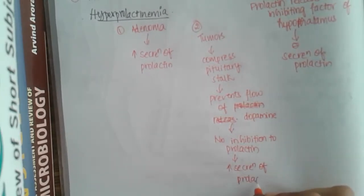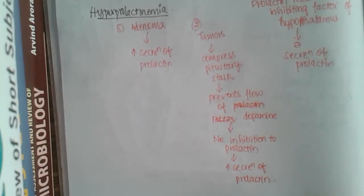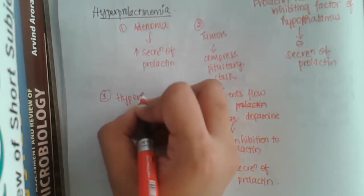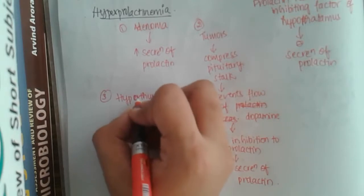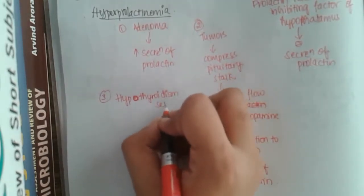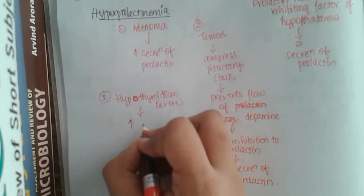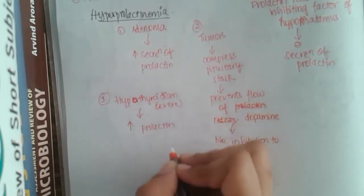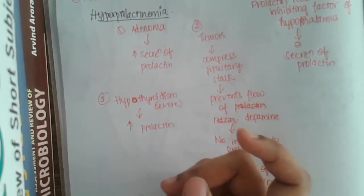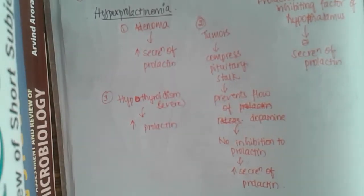The third mechanism is hypothyroidism. In severe hypothyroidism there is a slight increase in prolactin, because thyroid and prolactin are inversely related — whenever there is decreased thyroid hormone, there is increased production of prolactin.